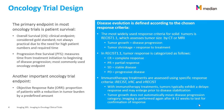RECIST 1.1 is used to assess tumor size and to classify patients from complete response to progressive disease. Depending on the progression and evolution of the tumor, tumor response is categorized as follows: CR equals complete response, PR equals partial response, SD equals stable disease, PD equals progressive disease. Immunotherapy treatments are assessed using specific response criteria: iRECIST, irRC, and ir-RECIST.